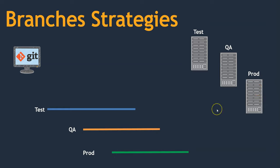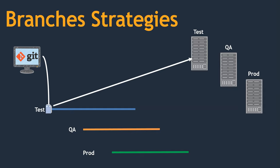If that is the case, it doesn't make sense to push our code onto the production branch directly and get it deployed on the production system. Instead, we can push our code onto the test branch first, build and deploy it on the test system. If the code is not working on the test system, no problem — test system is for testing purposes. I can understand where the bugs are and fix them.